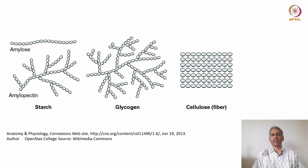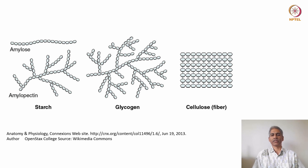Glycogen is a polysaccharide found in animal cells used for storage of glucose. It has a similar branched structure but with more branches compared to starch. In animal cells, we only have small stores of glycogen and need to make fairly rapid use of this store upon demand. A more open structure means hydrolysis of glycogen to generate glucose monomers will be faster compared to starch, which is why it has more branches.